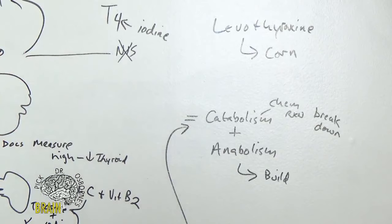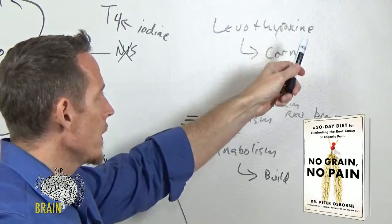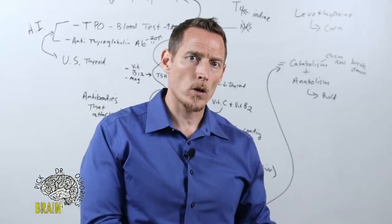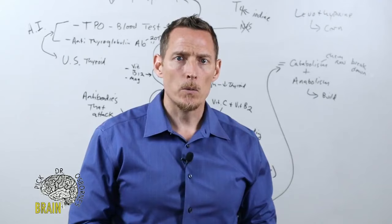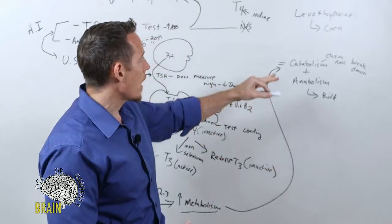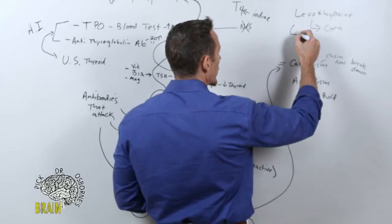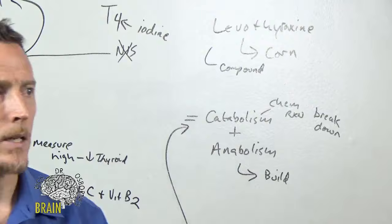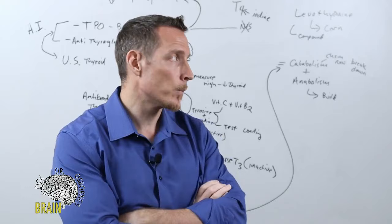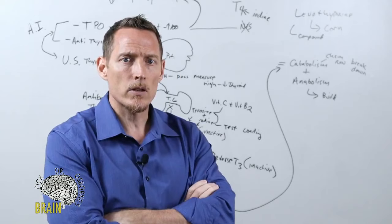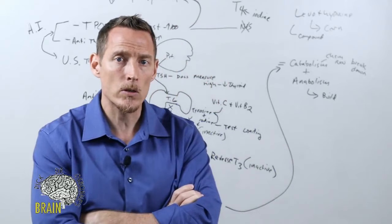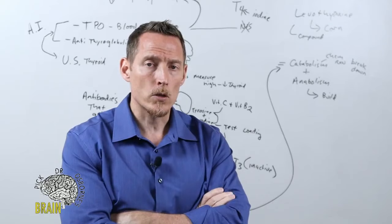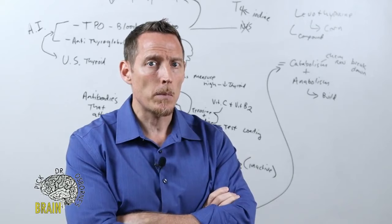The biggest problem with levothyroxine is that it contains corn, and corn is a form of gluten. If you're on levothyroxine, you may be getting persistent corn-gluten exposure that perpetuates the thyroid problem. Ask your doctor to compound levothyroxine without the corn — without the grain-based fillers. You can also try things like tyrosine, adrenal glandulars, and thyroid glandulars, which for some people are enough to eliminate the need for levothyroxine, but this needs to be managed properly under supervision.